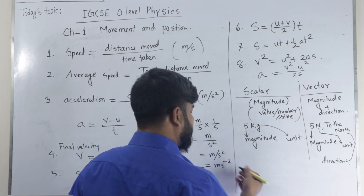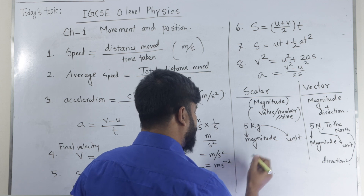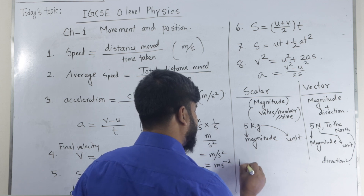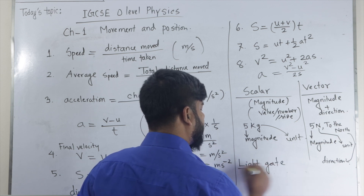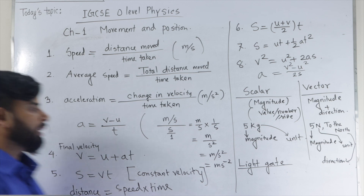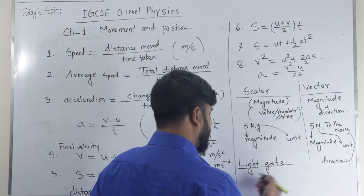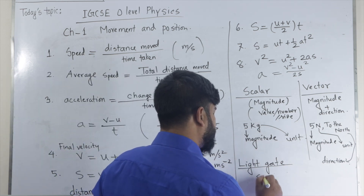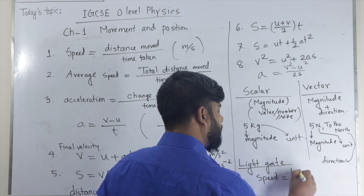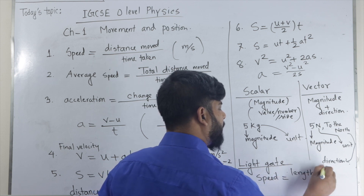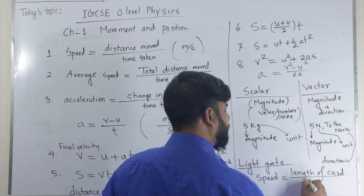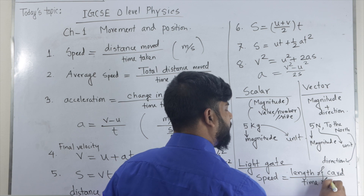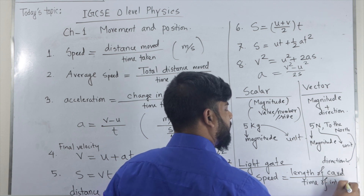Another thing: there is a formula for a light gate. A light gate is used to calculate the speed of a moving car or any moving object. Speed equals the length of the cart divided by the time of interruption.